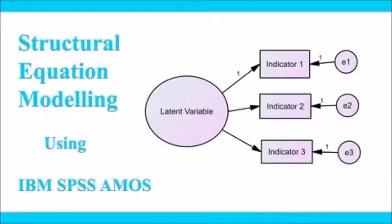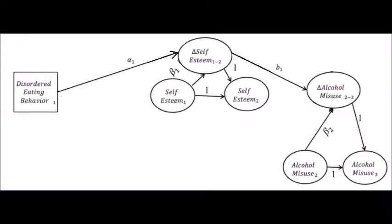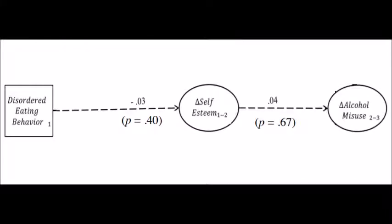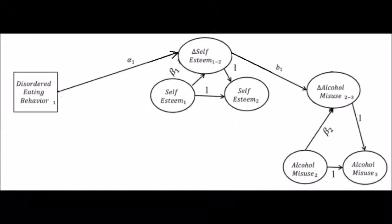After running this mediation model in AMOS, you will get results similar to those shown. In this result diagram, we can see that disordered eating behavior at time one does not predict the change in self-esteem, and the change in self-esteem does not predict the change in alcohol misuse. Therefore, we conclude that mediation does not exist in this example.